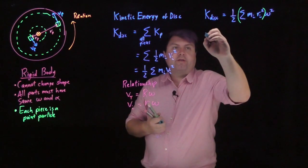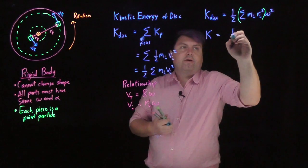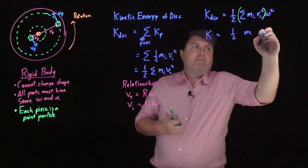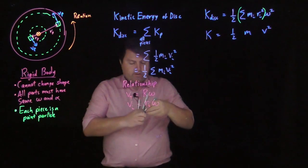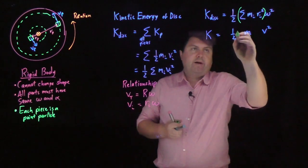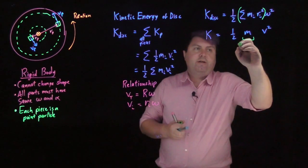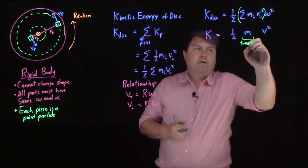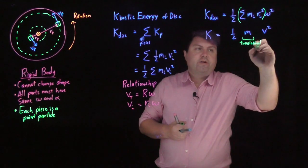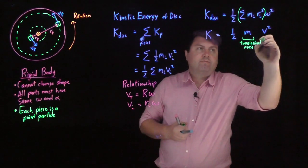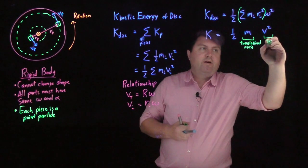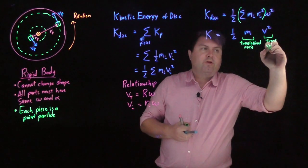Now, let's compare the translational kinetic energy, one-half m v squared. So this is one-half. This is the translational mass. This is the translational velocity.